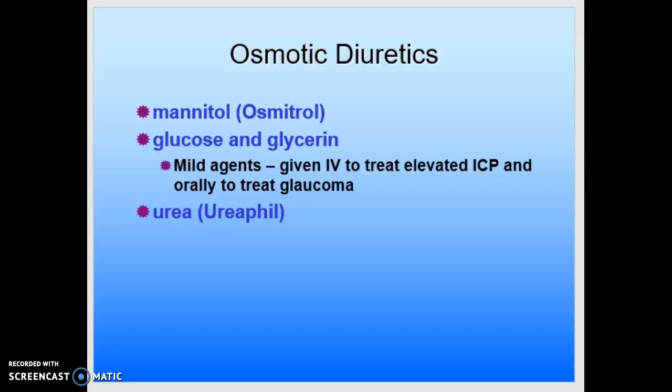Let's talk about the osmotic diuretics. These are things like mannitol or osmotrol. Glucose and glycerin are mild agents that we can give intravenously to treat elevated intracranial pressure, or orally to treat glaucoma. And then there's urea or ureafil.